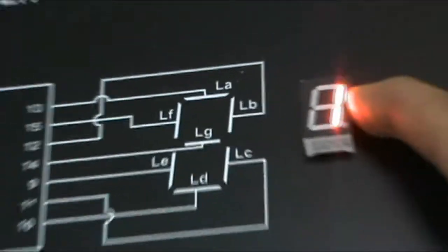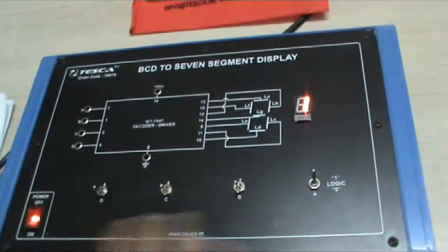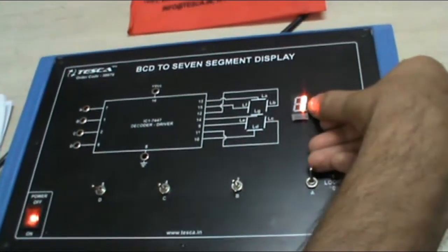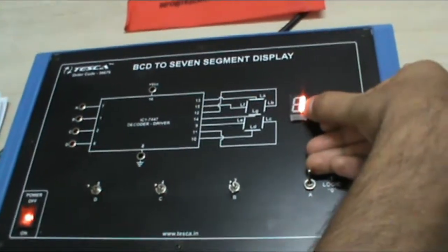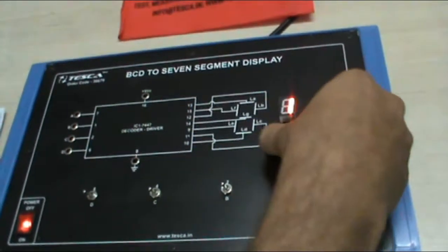Now in order to display 1, my input A is 1 and the rest are 0. B, C, D are 0. And in the 7 segment display, segments b and c are 1, and the rest are given as 0.